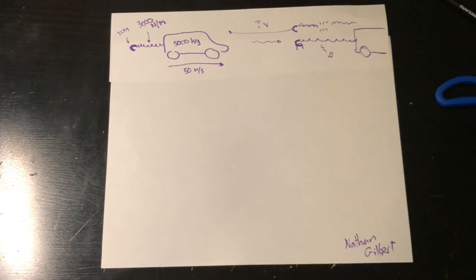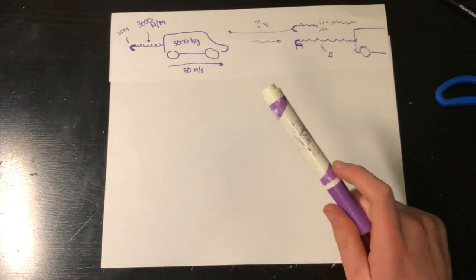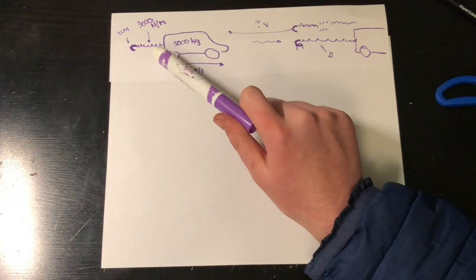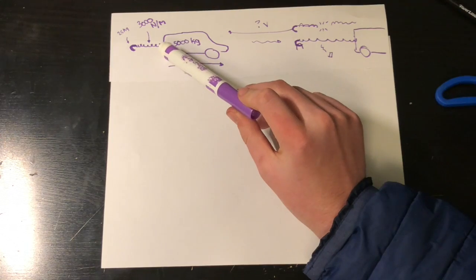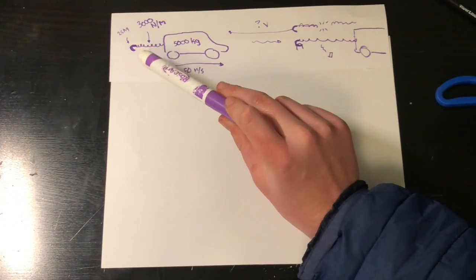So here we have a 5,000 kilogram car moving 50 meters per second, dragging a spring and a hook behind it. The spring has a spring constant of 3,000 newtons per meter, and the hook weighs 25 kilograms.